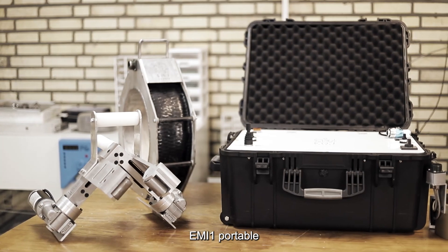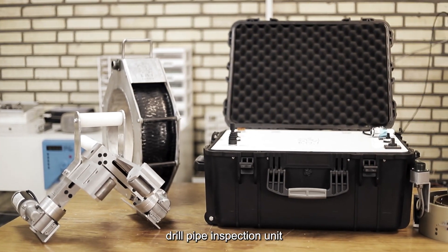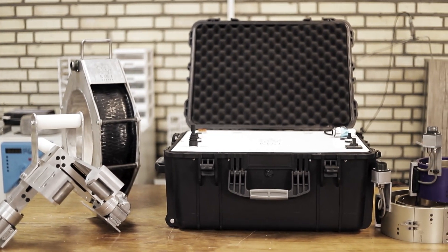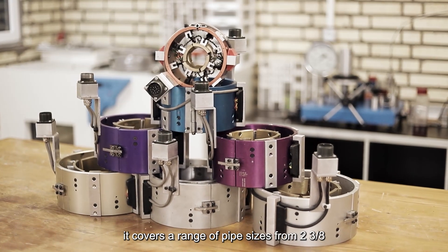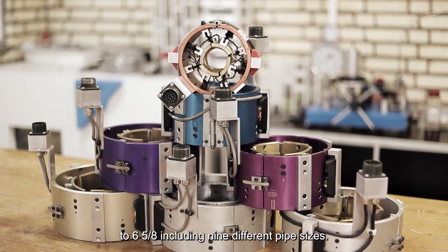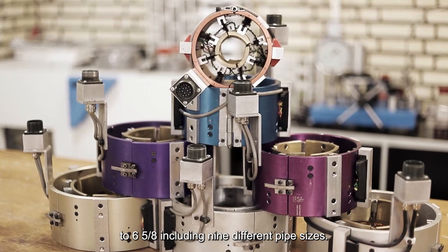Edesatech's EMI1 four-top drill pipe inspection unit is designed for inspecting transverse flow in drill pipes. It covers a range of pipe sizes from 238 to 658, including nine different pipe sizes.